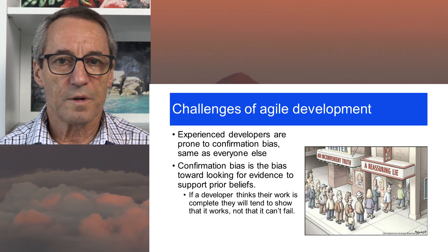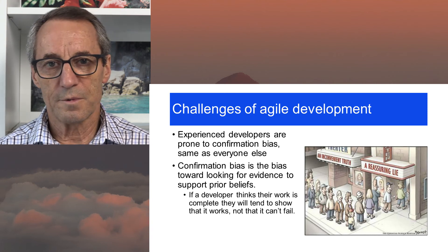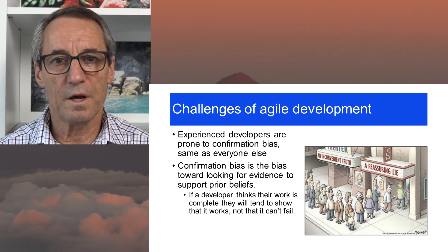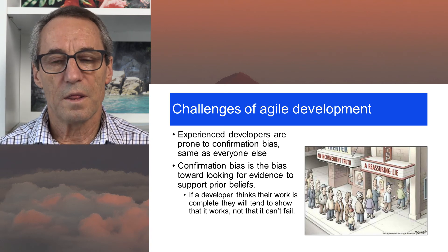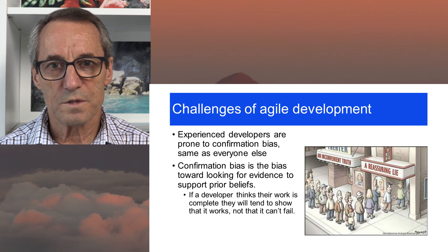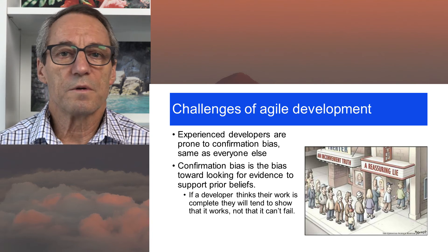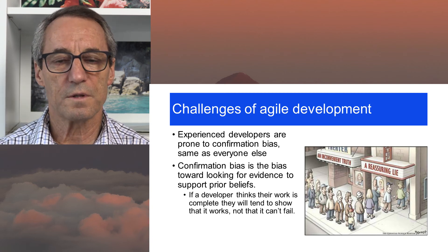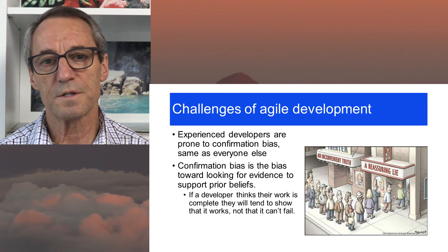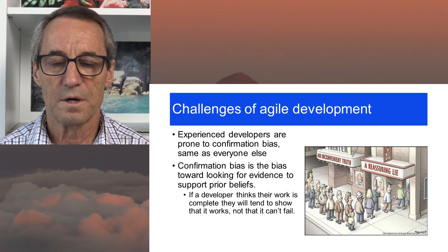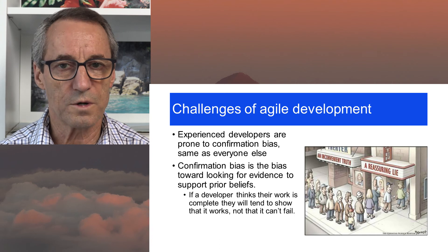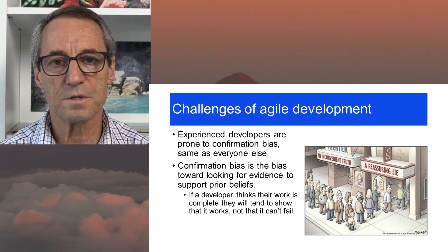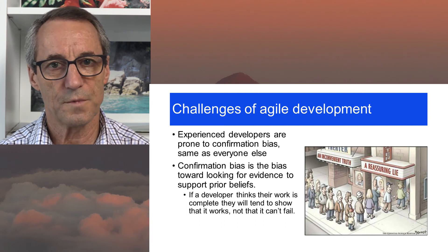With software development, a developer has thought about the problem, thought about the implementation, and implemented some code. Naturally, when they finish, they are going to believe it works — if they didn't believe that, they wouldn't have stopped. So they will then look for evidence that it's correct. They will construct unit tests that show it works. It's a very rare developer that constructs a unit test that shows it doesn't work, or even tries.